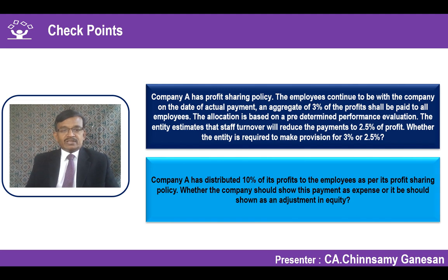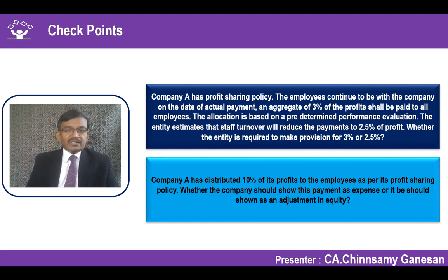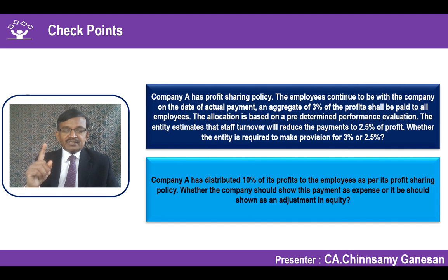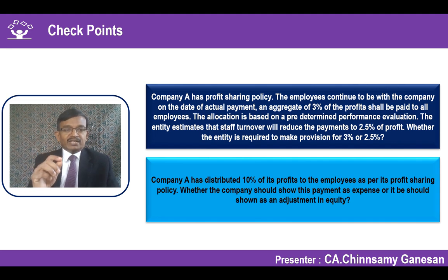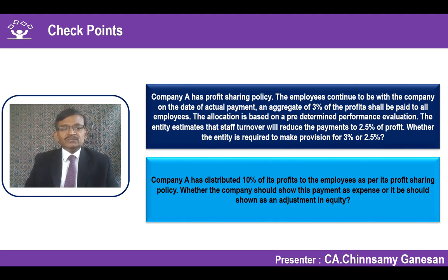If 10% of profits is payable to employees as per the profit-sharing policy, it should be treated as an expenditure in the profit and loss account — not adjusted in equity. Distribution of profits can happen only to shareholders; since this is a payment to employees under the contract of employment, it should be debited to the P&L account.